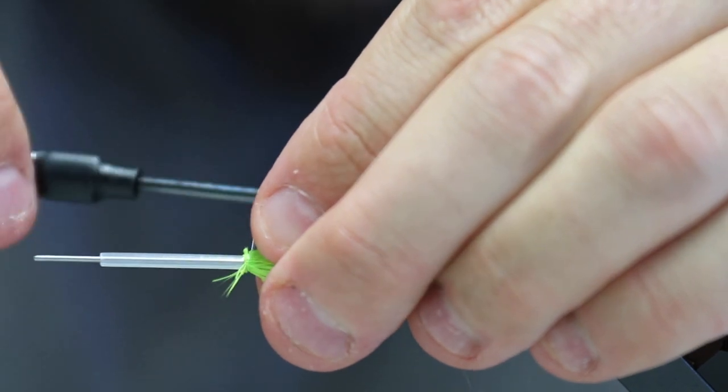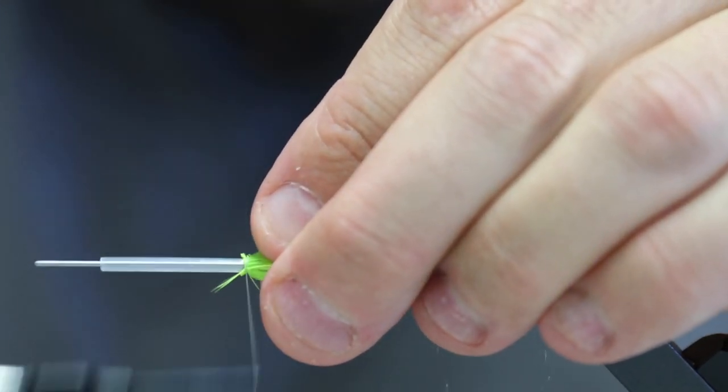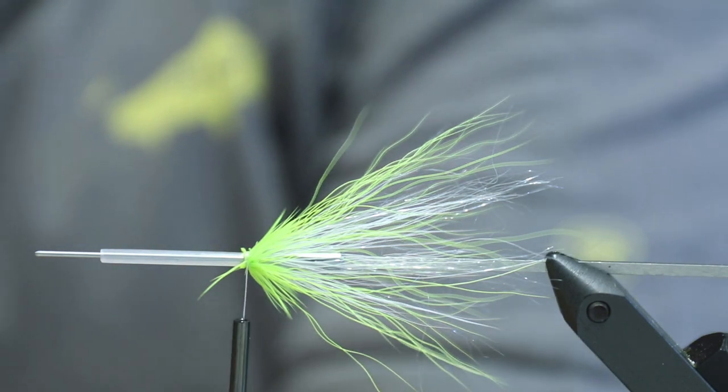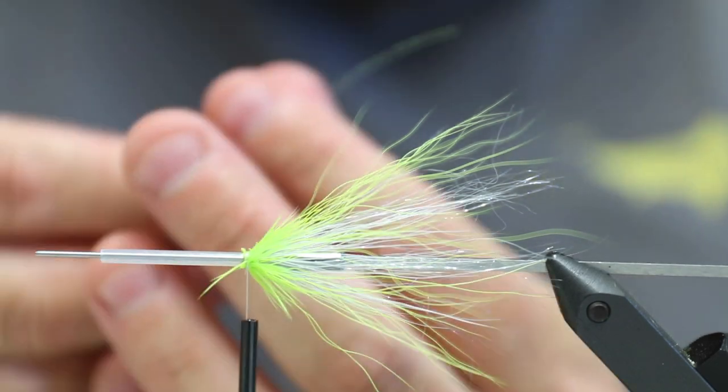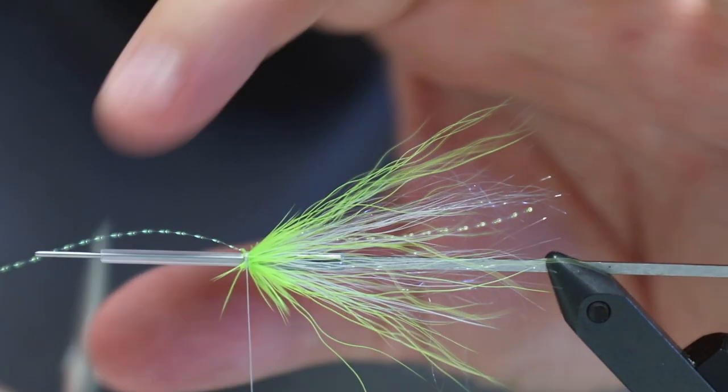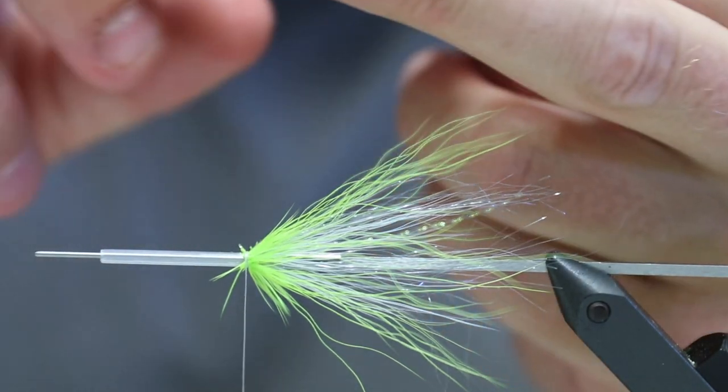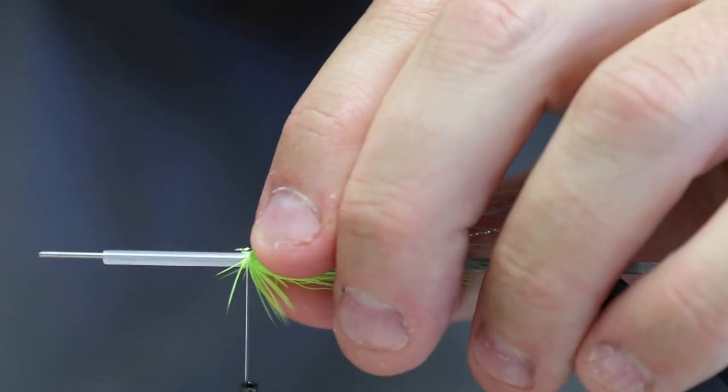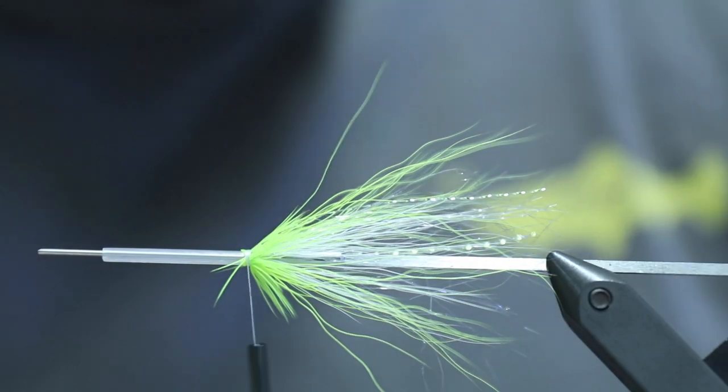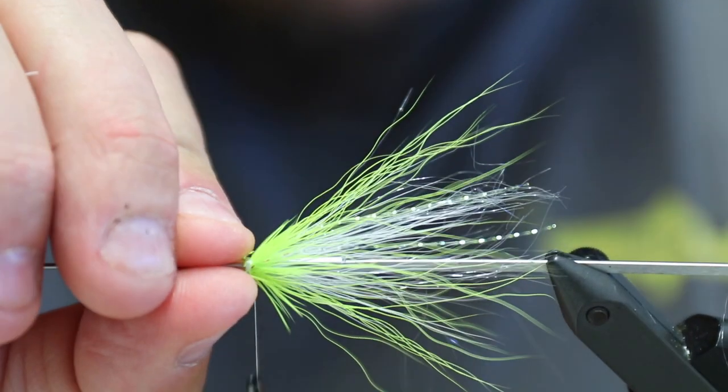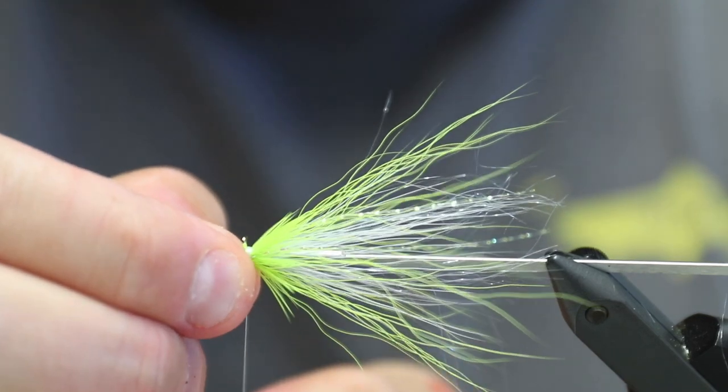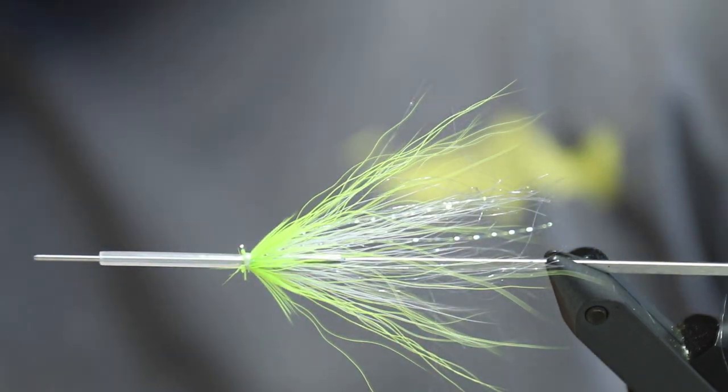Cut off the feather. Fold all the hackle fibers backwards. And then I am going to take two strands of flash. And for this I am going to use Mirage Flash. So I am going to take one strand on one side and then one strand on the other side to kind of give it a sideline effect. This is actually long enough that I can use just one. So there you have the sidelines. Going to make a whip finish. Cut off my thread. Apply some super glue.